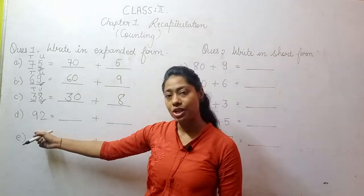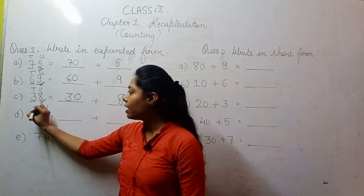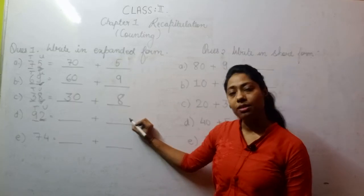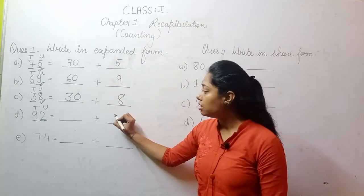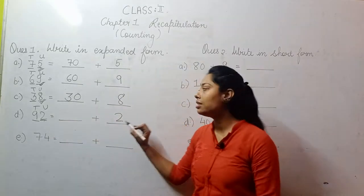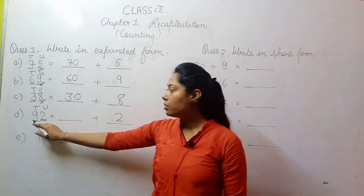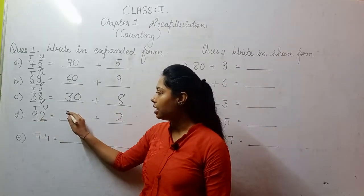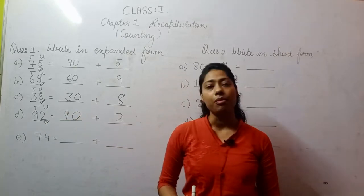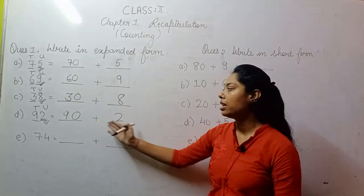Moving to D part of the question. This digit is your units place and this digit is your 10th place. Write the unit digit at units place — I have written 2 here. Is there any digit after 2? No, so we will not add a 0 after it. Similarly, the 10th place digit is 9, and after 9 you can see there is 1 digit, so you add one 0 — making it 90 plus 2.